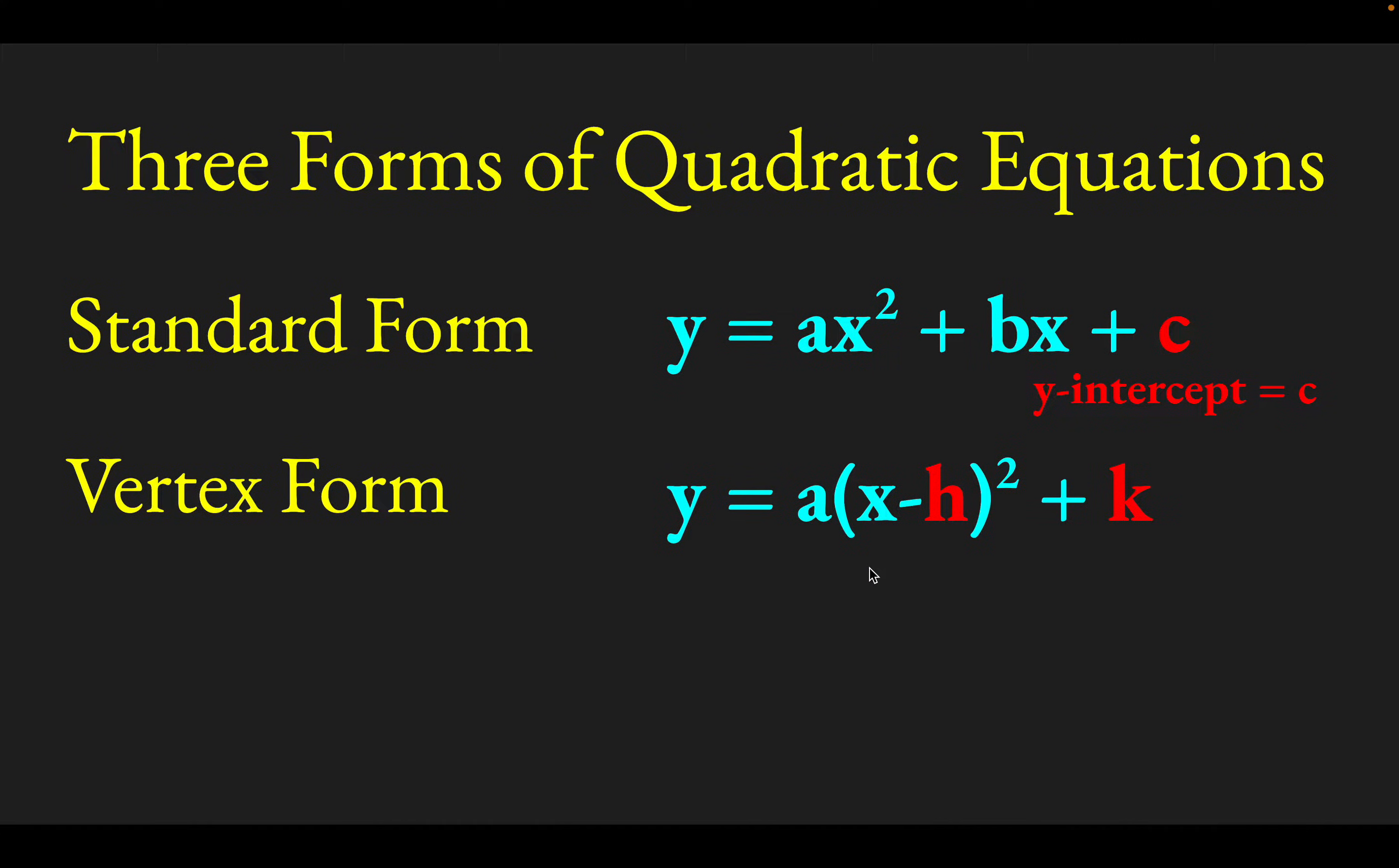Another form is called the vertex form. The value in this one is that these constants h and k are the x and y coordinates of your vertex. That'll tell you where either the minimum value is of the parabola if it points upward or where the maximum occurs if it opens downward.